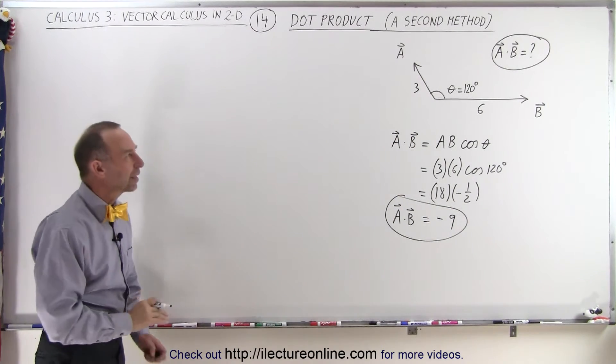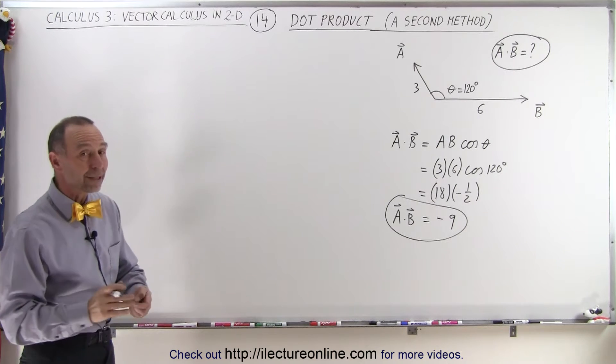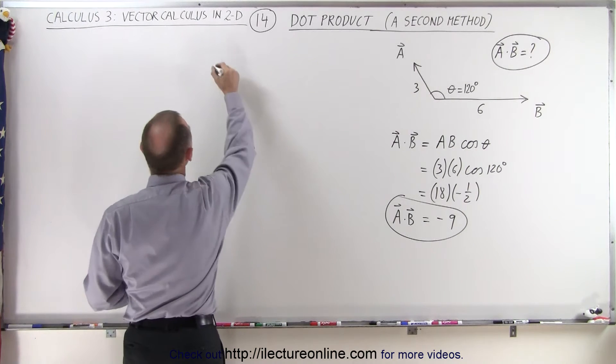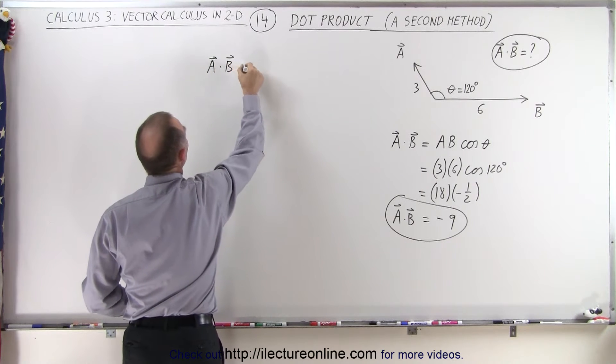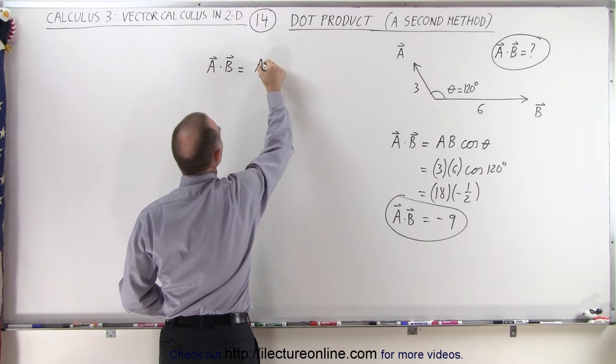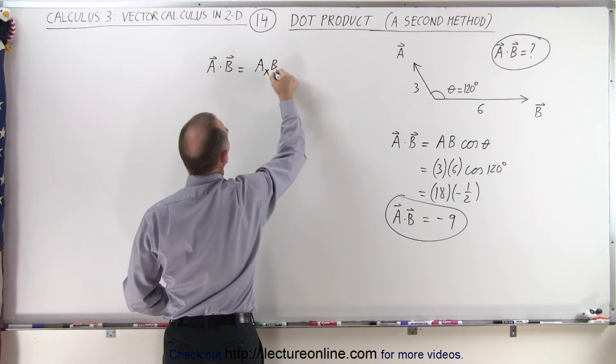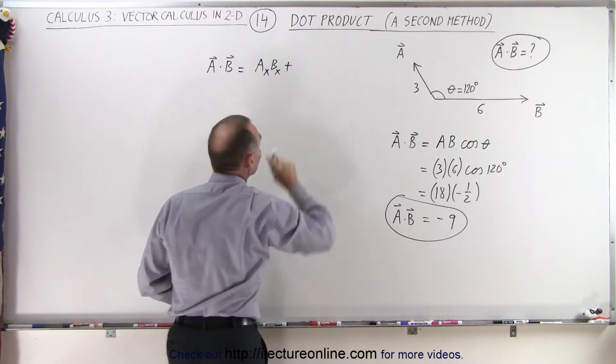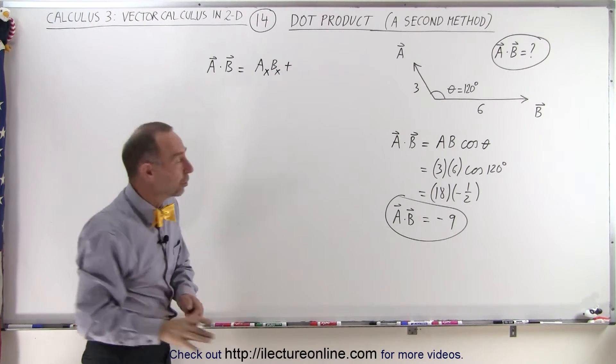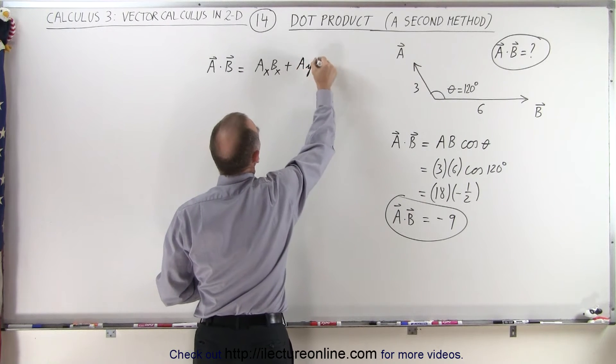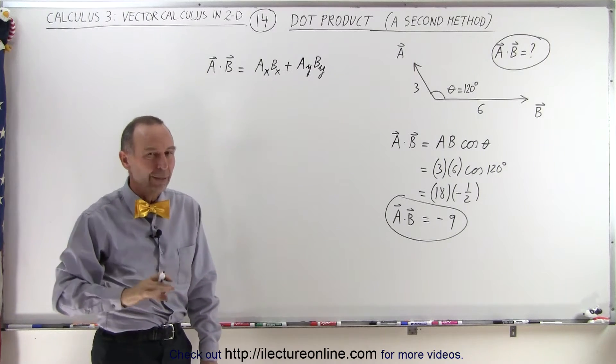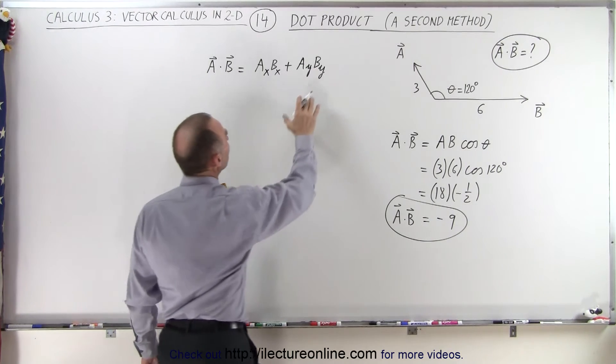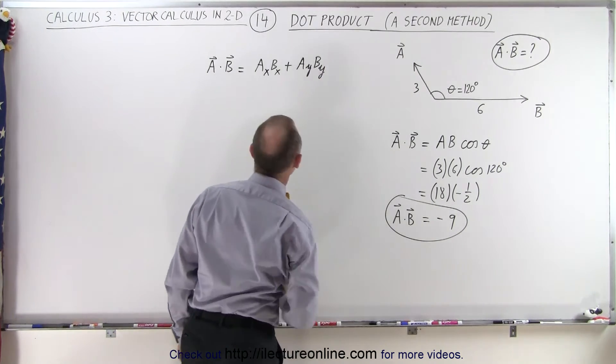So what is this second method that I mentioned? Well, the second method is as follows. We can also multiply via the dot product A times B by multiplying the X components of the two vectors together, plus multiplying—and not just the components, but the magnitude of the components—and multiplying the magnitude of the Y components of the two vectors together. And of course, if this was a three-dimensional vector, then you'd also multiply the Z components together.